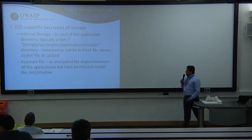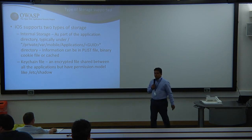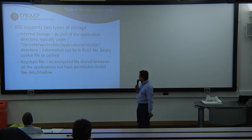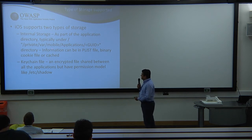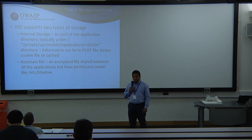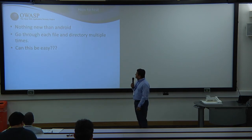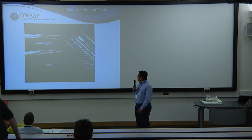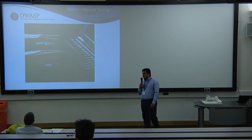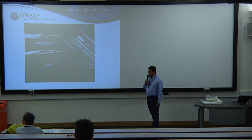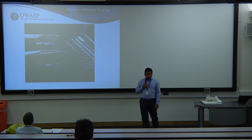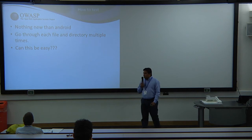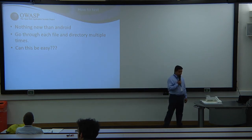For iOS, the OS doesn't provide APIs to monitor the file system, so we came up with a different approach. iOS has two types of storage: internal storage and the keychain file. The methodology is to go through the different files and directories to find the information — that's the manual review approach.